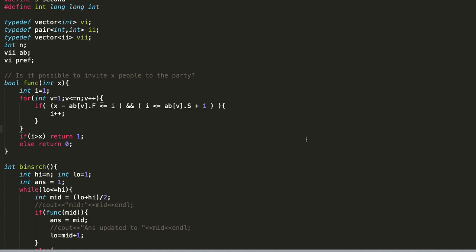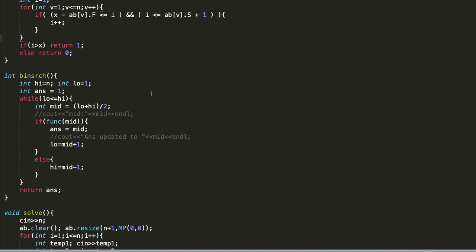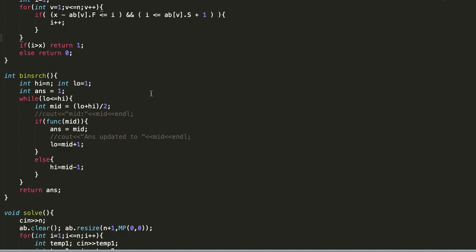Moving on to the code, this is the code. This is the code for binary search. We are binary searching on x and this is the logic for function.